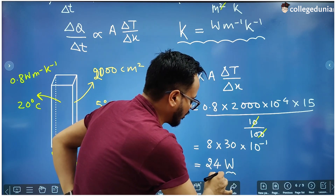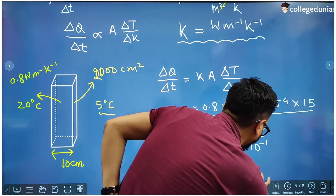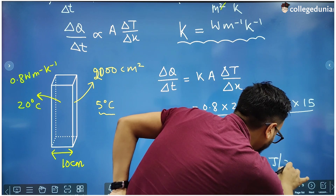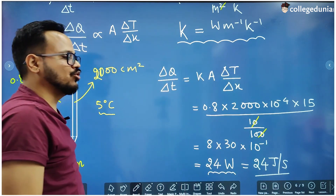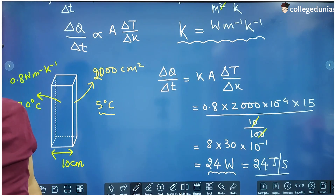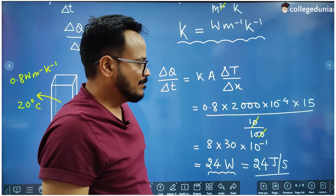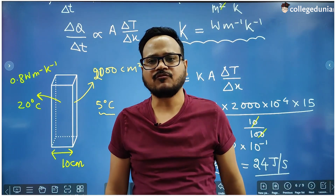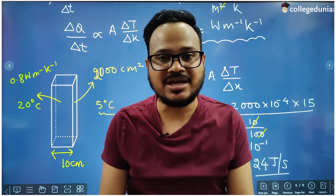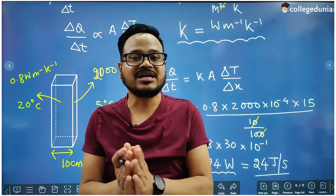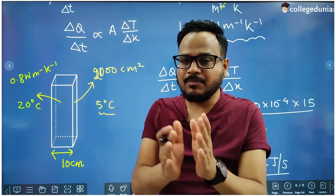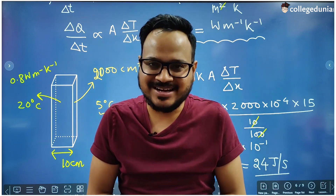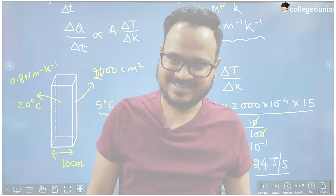So 24 joules of heat is going out through this window per unit time. This is how you use the heat transfer formula. It is a very important formula in thermodynamics, mainly in the chapter on thermal properties of matter from class 11 physics NCERT. I will meet you in the next lecture — till then, all the very best.